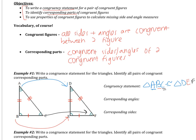We are also asked for the corresponding angles — the angles that are congruent. Angle A is congruent to angle D, angle B is congruent to angle E, and angle C is congruent to angle F. You can find this information in two ways: by looking at the tick marks in the figure, or by reading directly from your congruency statement, where the first angle corresponds to the first, the second to the second, and so on.